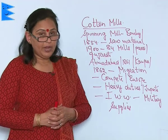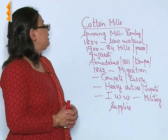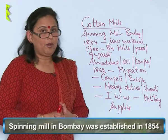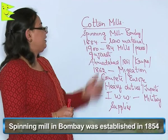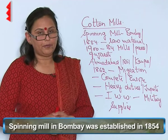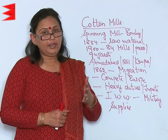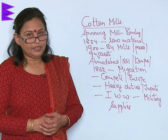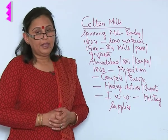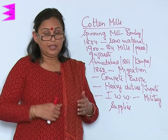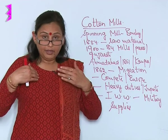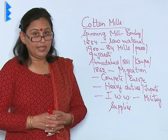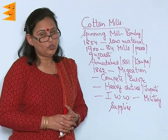If we look at the history of the cotton mills in India, the first spinning mill in Bombay was established in the year 1854 because raw material was easily available near Bombay, as it is a cotton-producing belt. Besides, trade could be carried on to various countries of the world as it is near the sea.